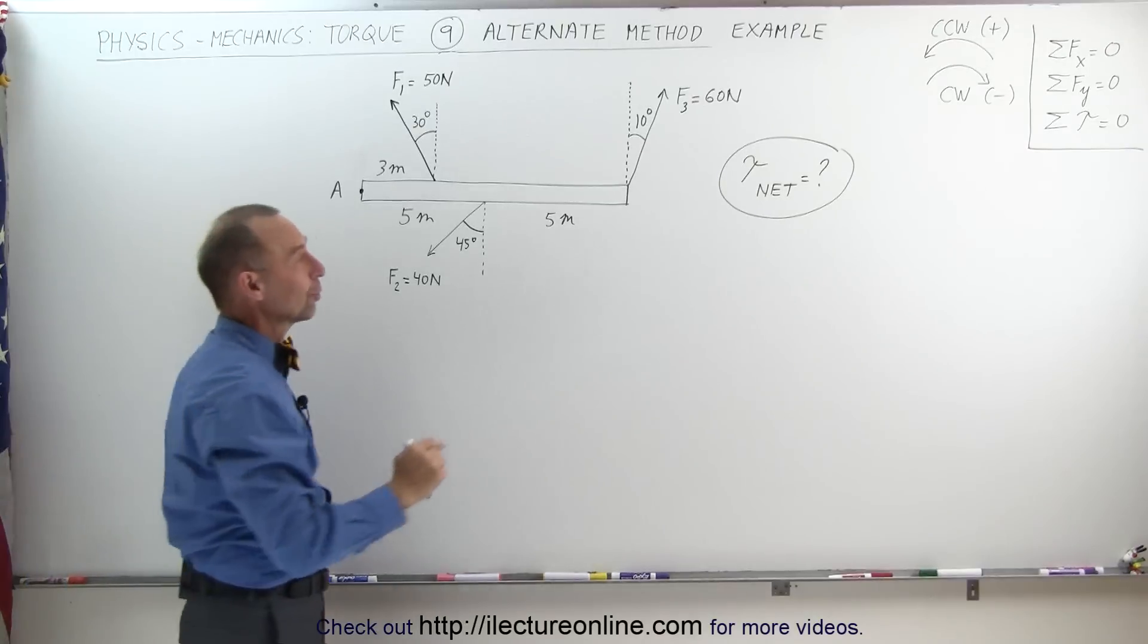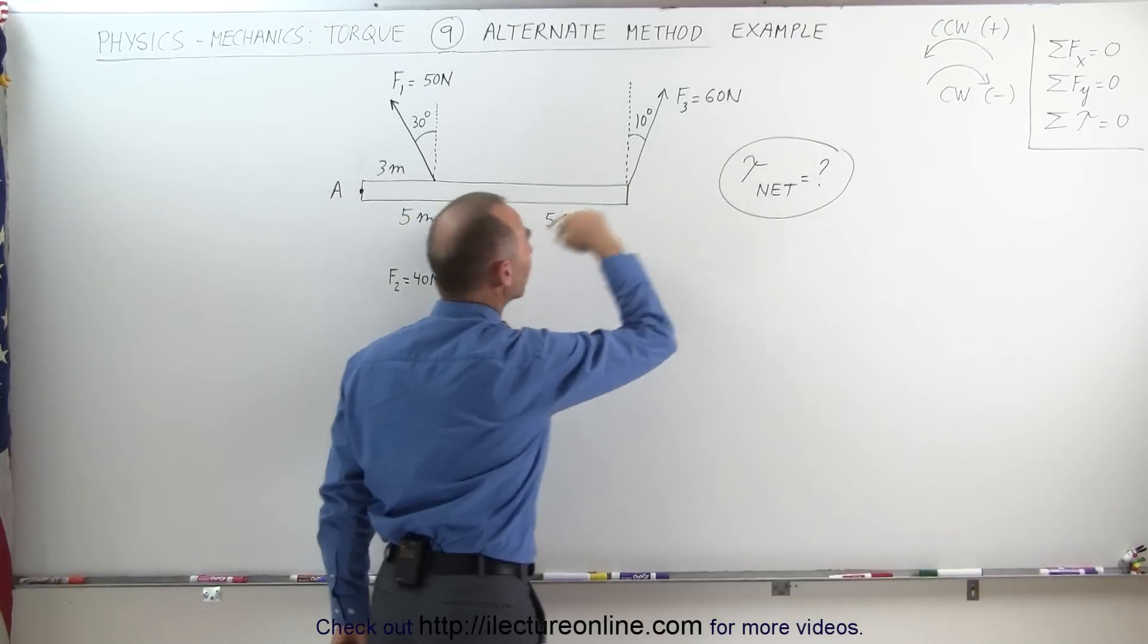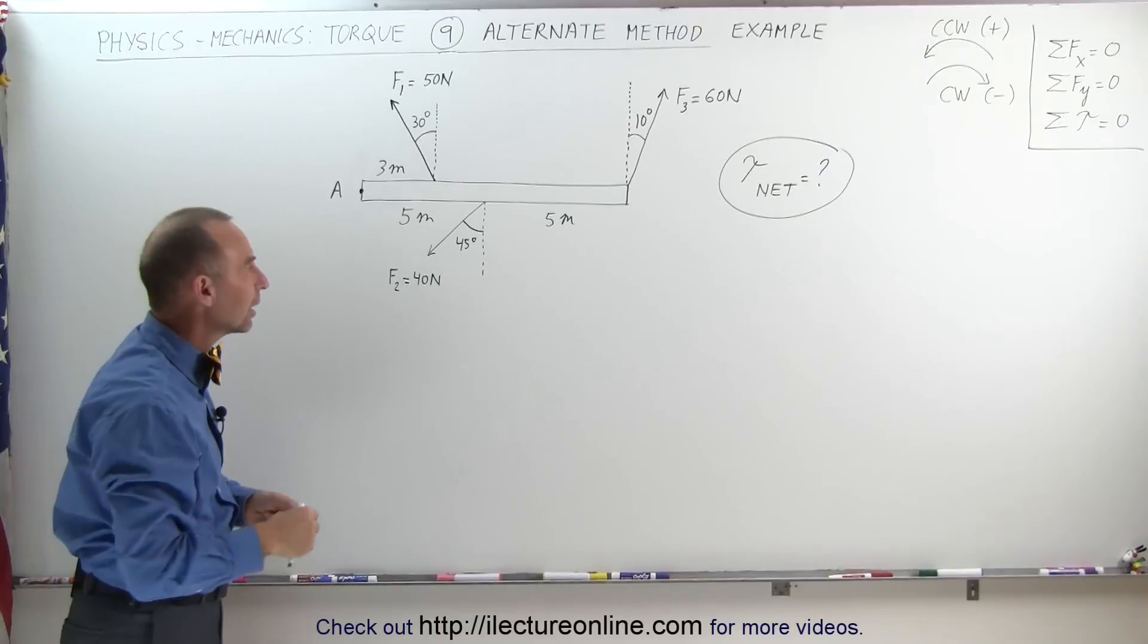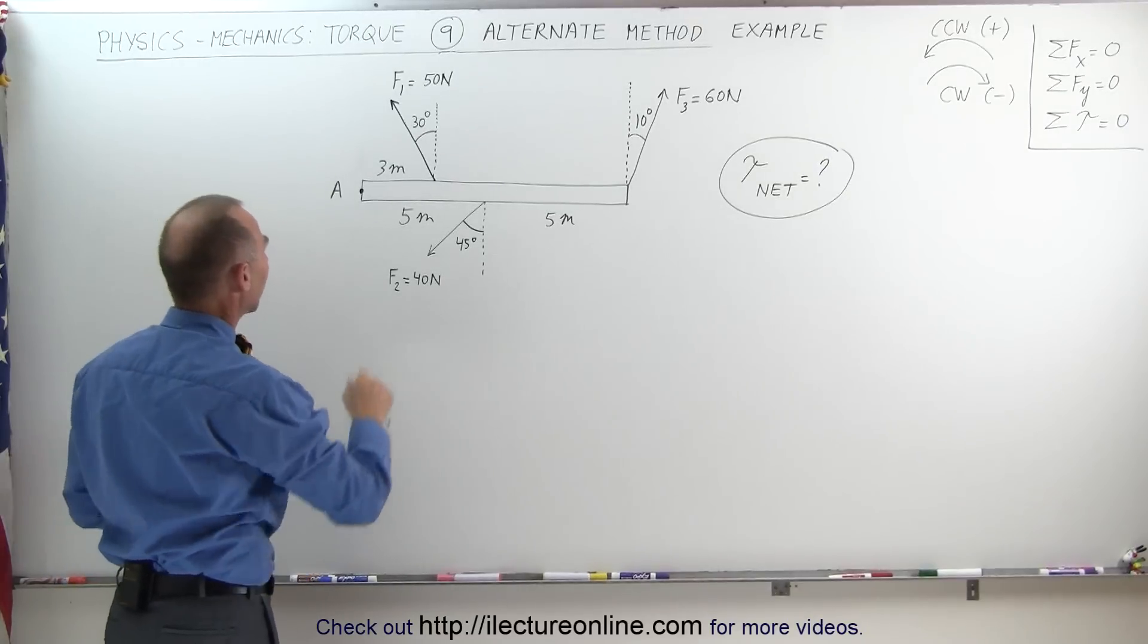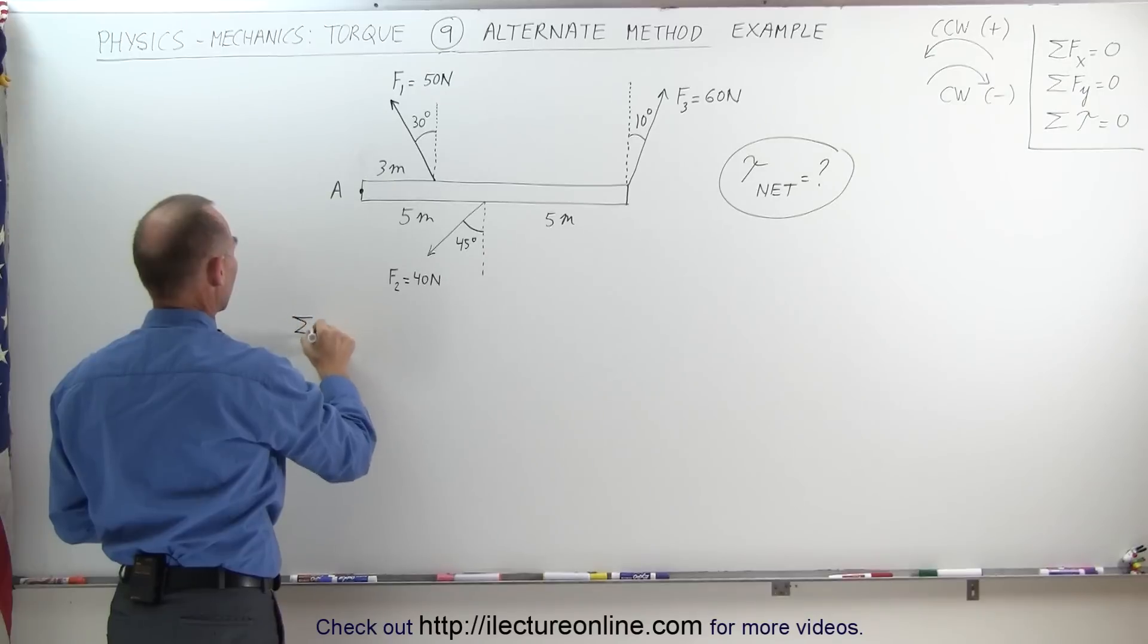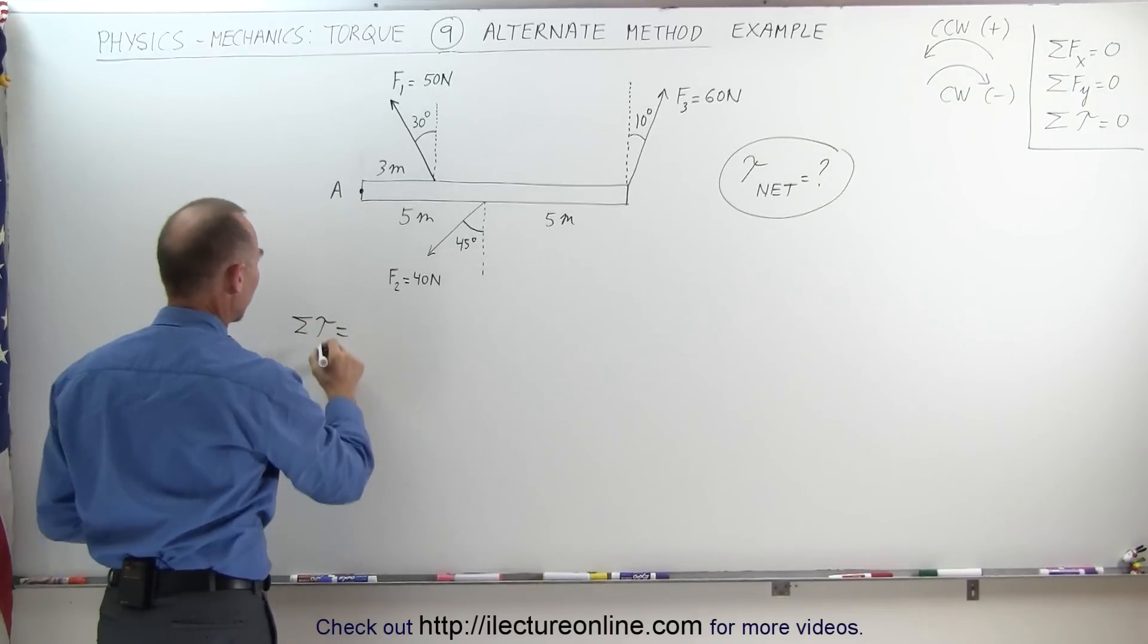We're trying to find the net torque acting on this beam. Assuming the mass of the beam is insignificant, we can ignore it. Therefore, the sum of the torques about point A is equal to...